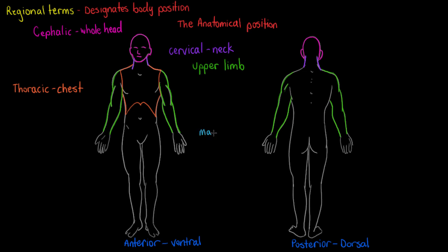Our next region is our hand, and we call it the manus or manual region, and it's designated separately from our upper limb. So drawing the hand in here quickly. I always found the easiest way to remember this one is that you drive a manual or stick shift car with your hand to change gears — so that's how you can remember the hand as manual.